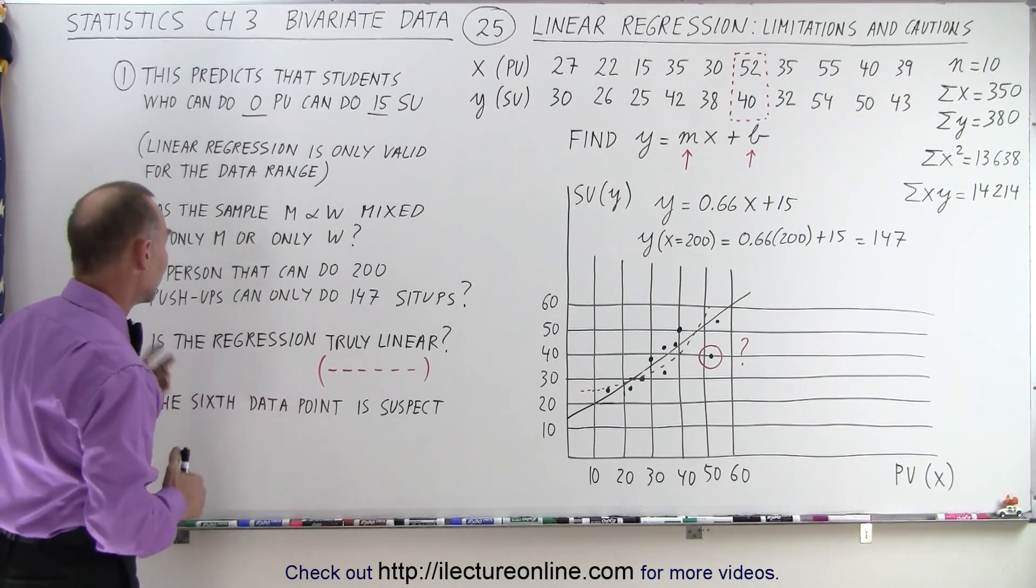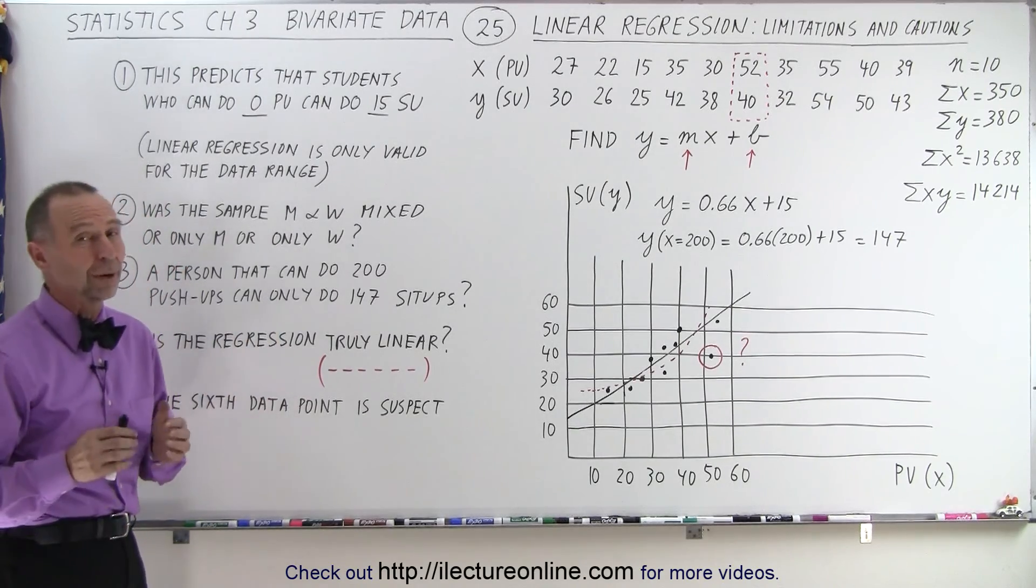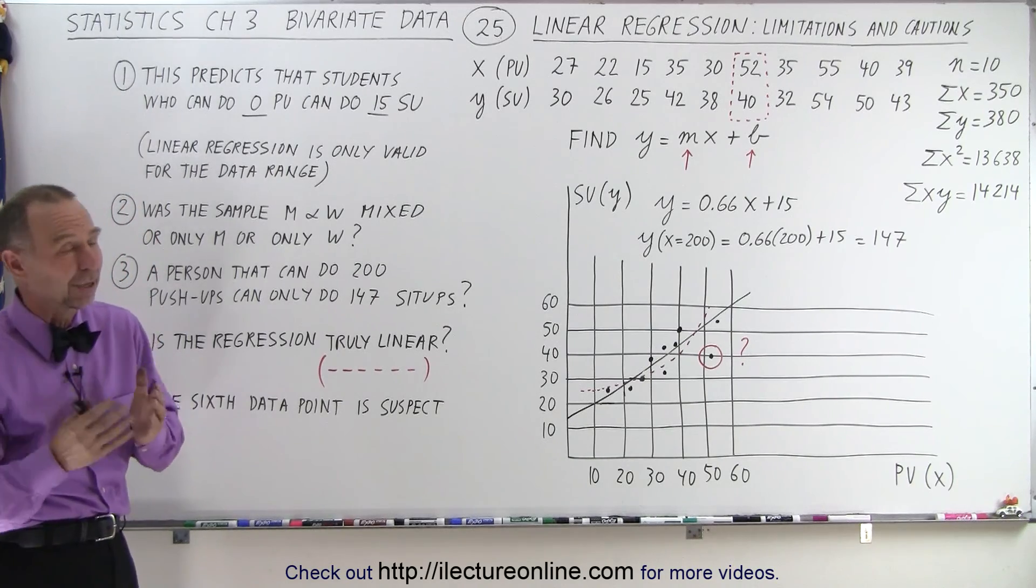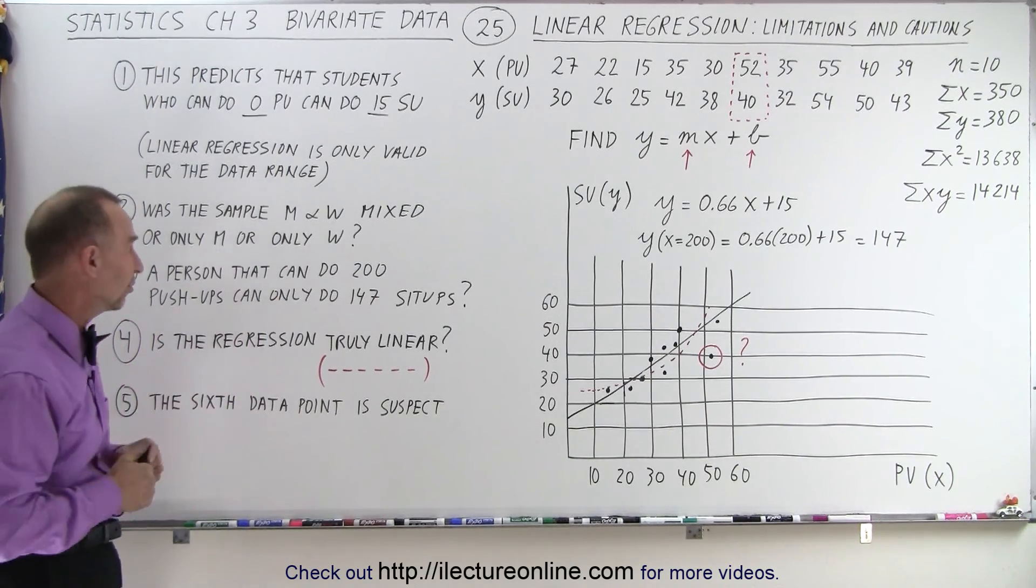So, here again, I mentioned that if a person can do 200 push-ups, they can probably do a whole lot more than 147 sit-ups. So, it doesn't appear like this linear regression is valid to a very great distance.